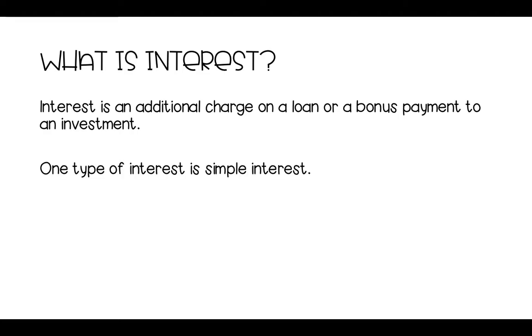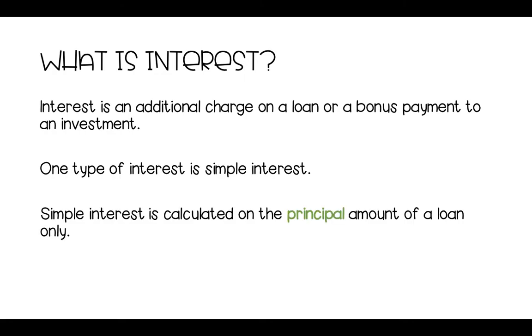So one type of interest we're going to look at is simple interest. Now, simple interest is calculated on the principal amount of a loan only, so just on the principal amount. Now, the principal amount is the amount that you borrowed or was invested, so it's either how much you borrowed from the bank or how much you put into the bank or into shares or into any sort of investment you can think of. If it's using simple interest, it's based on the principal amount.